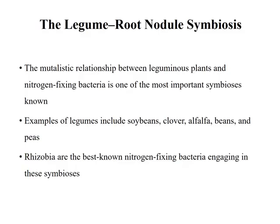The legume root nodule symbiosis — the mutualistic relationship between leguminous plants and nitrogen-fixing bacteria — is one of the most important symbioses known. Examples of legumes include soybeans, clover, alfalfa, beans, and peas. Rhizobia are the best-known nitrogen-fixing bacteria engaging in these symbioses.